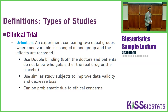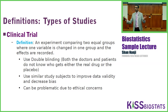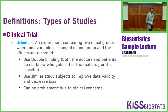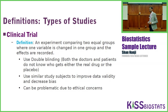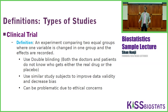In a clinical trial, you're going to use what we call double blinding. Double blinding means both the doctors and the patients don't know who gets the real drug or who gets the placebo. This way you keep it double blind so your results are going to be unbiased. You also use similar study subjects to improve data validity and decrease bias — subjects that are similar in age, gender, race, height, and weight — so you're comparing similar groups of people.